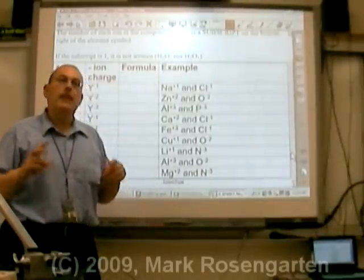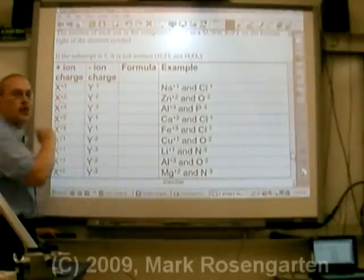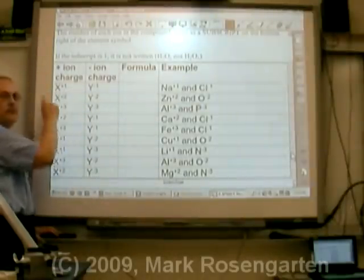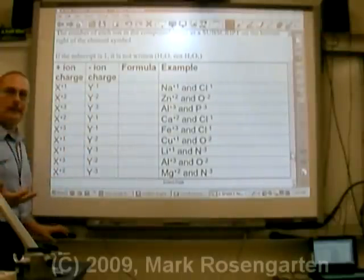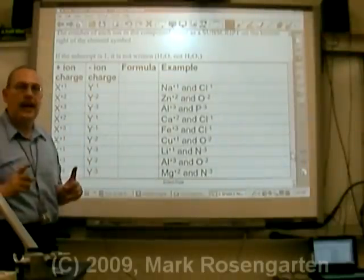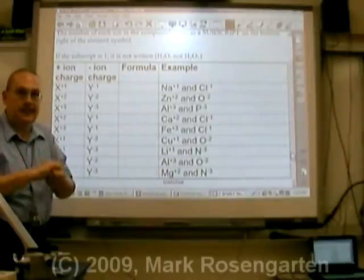When elements combine, they generally do so because they're made of oppositely charged ions. Positive metal ions, negative non-metal ions. When they combine, they'll always do so in such a way that their ion charges cancel out and add up to zero.